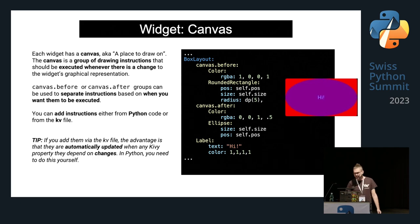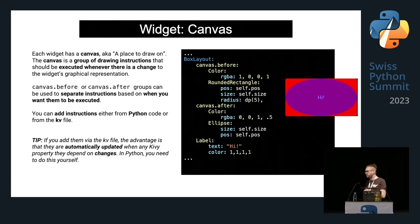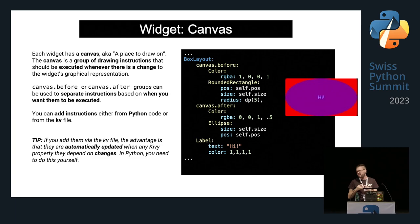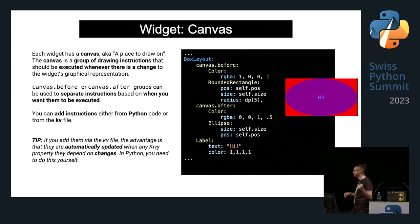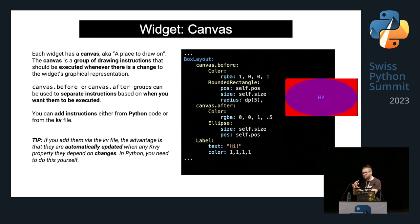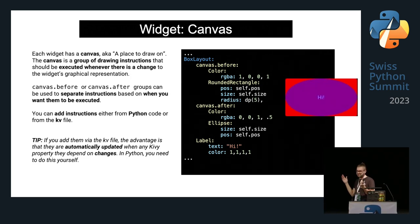Each widget has a canvas — a place to draw on. The canvas is a group of drawing instructions executed whenever there's a change to the widget's graphical representation. Canvas.before and canvas.after groups can be used to separate instructions based on timing. You can add instructions from Python code or from the Kiwi file, but from the Kiwi file the canvas is automatically updated when any Kivy property changes. In Python, you need to do that yourself — so please, use Kiwi Language.